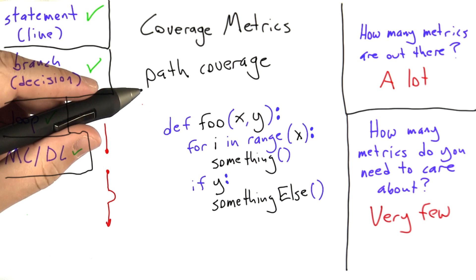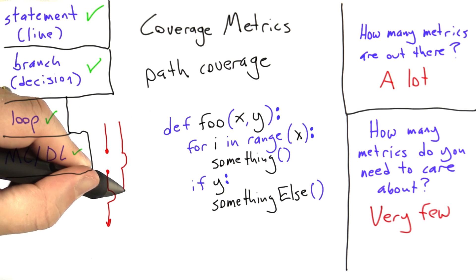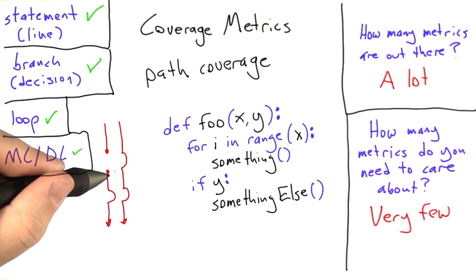Now if we come in with x=1 and y true, we execute something, we execute something else, and we leave. This is a separate path through the code because we made a different set of decisions.